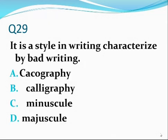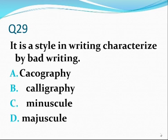Number twenty-nine. What is a style of writing characterized by bad writing? Kakography. What is calligraphy? Characterized by beautiful writing. What is manuscript? It refers to those written by hand using small letters. What is majuscule? Capital letters.